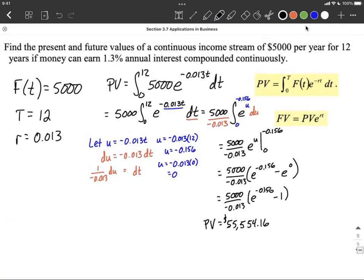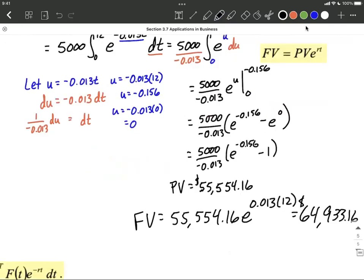Now if we want to find our future value, which we do, we're going to fill this in to our future value formula. So our future value will be given by our present value, 55554.16 times e raised to the rate, still the same rate, 0.013 that we had before. And then t is up in the exponent as well. But our time in this case is going to be 12, which works out to be $64,933.16, rounded to the nearest cent.